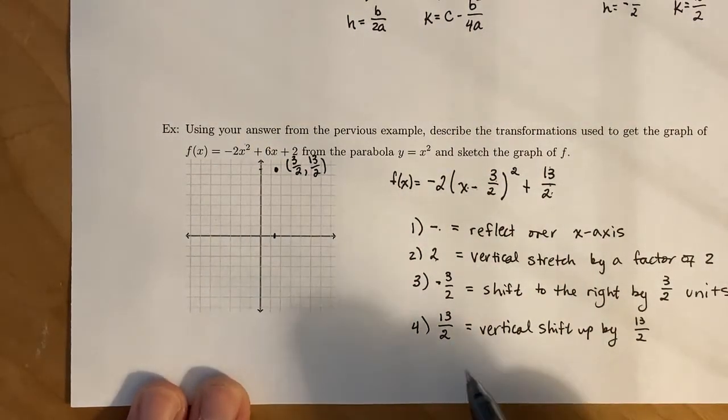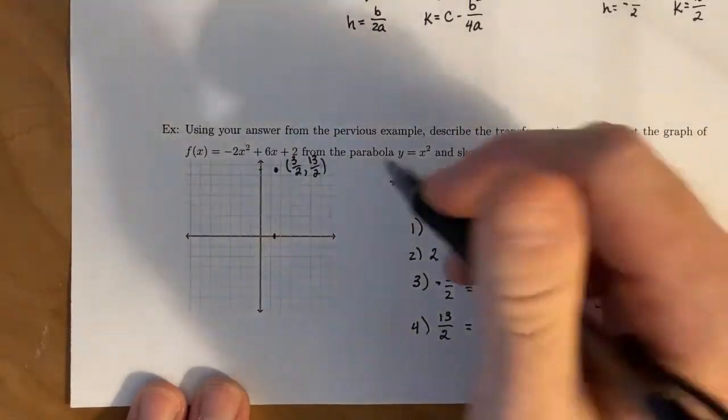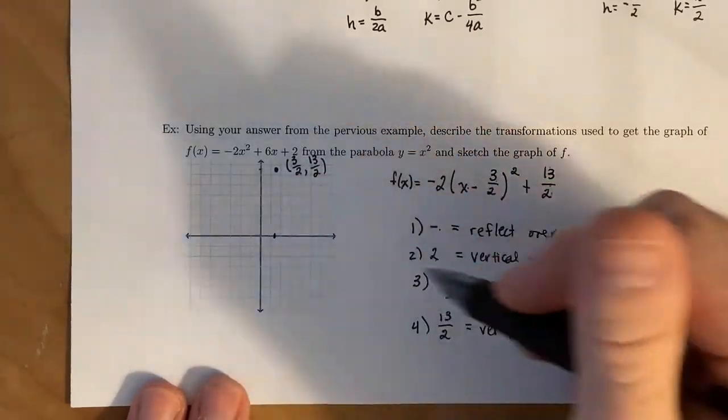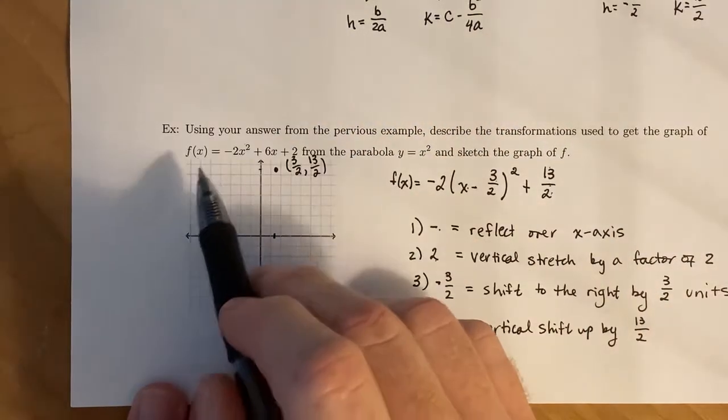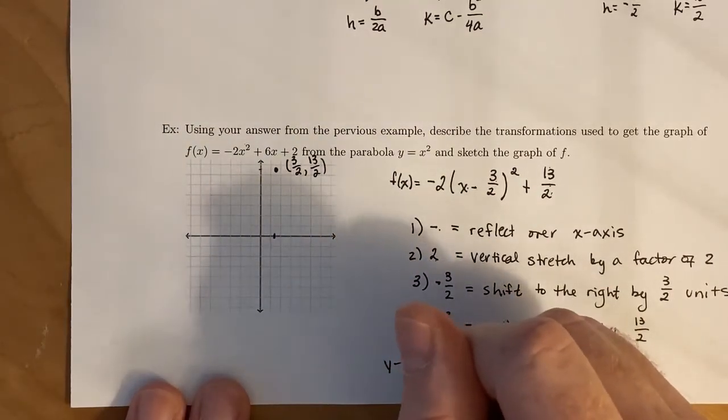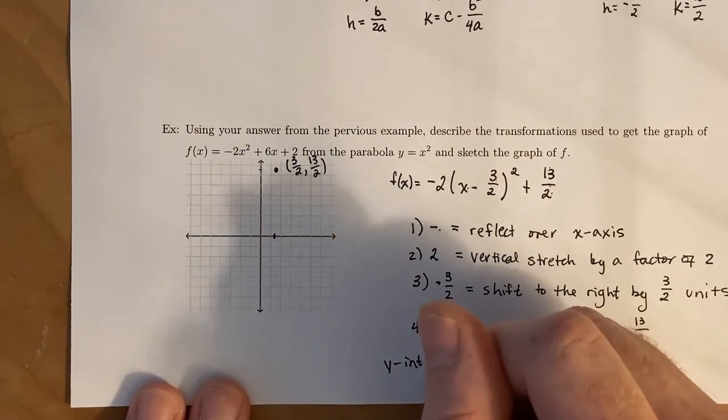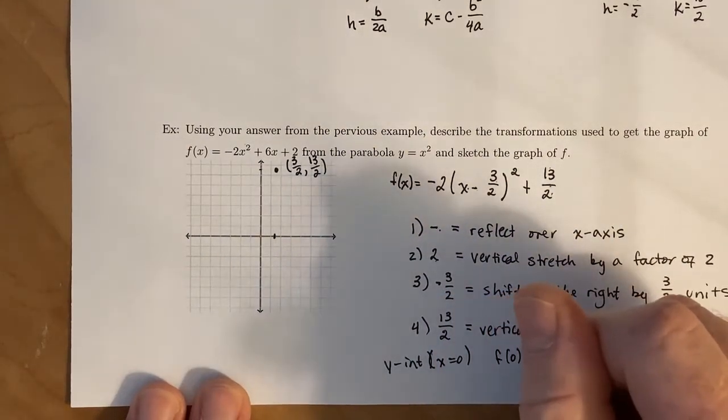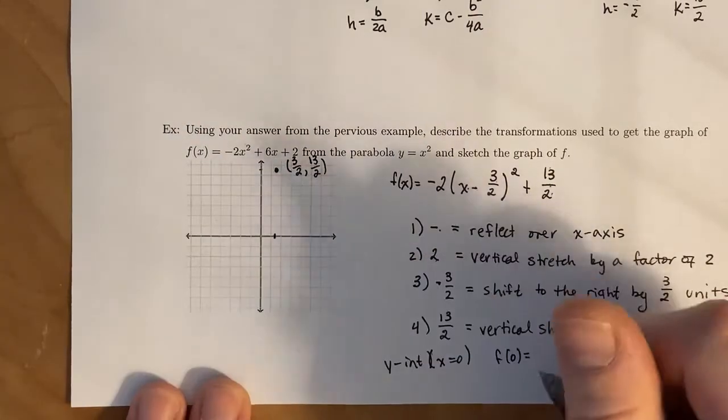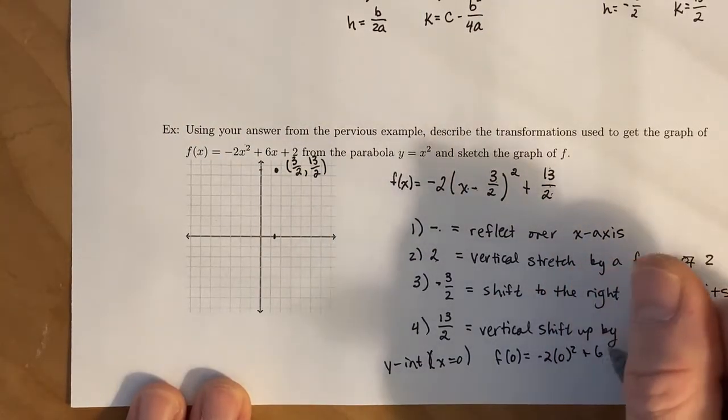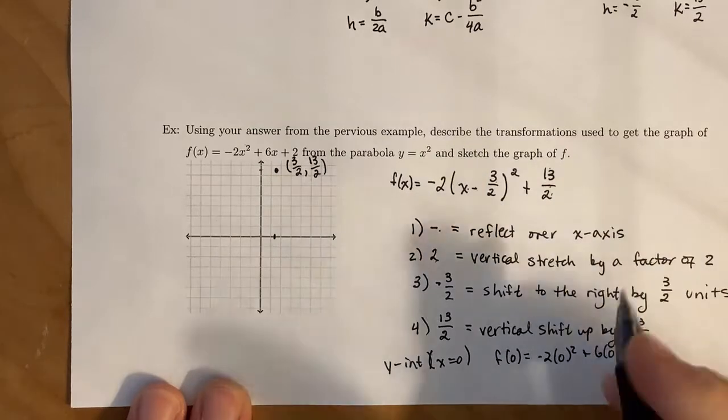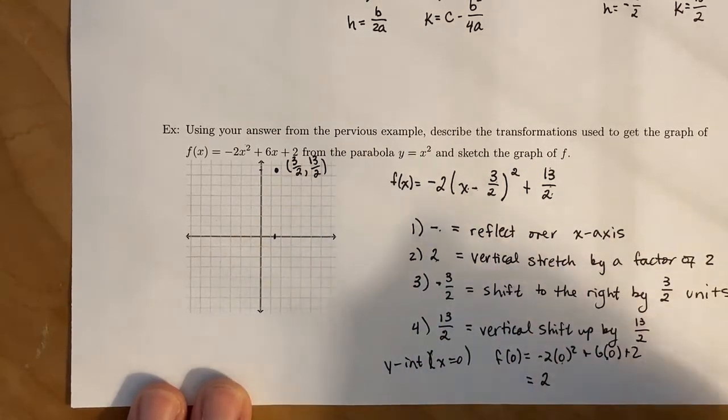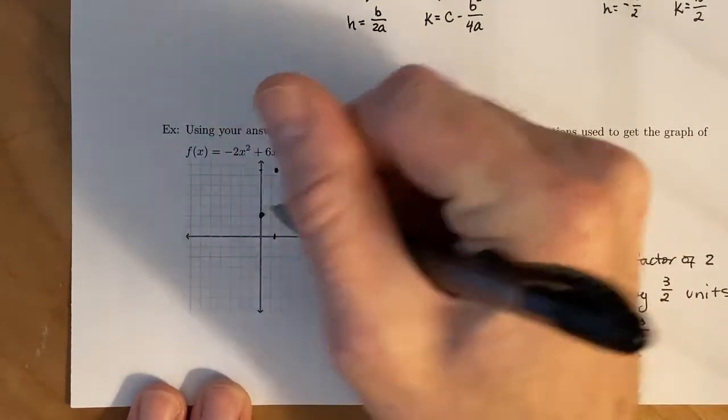Once we have the vertex plotted and we know that it's upside down, I like to find the y-intercept just to give me a sense of how steep this is. So if we plug in 0 for x, we end up getting -2(0)² + 6(0) + 2. Anything that has a 0 that's multiplied just knocks it out. So we're left with 2, which means our y-intercept is 2.